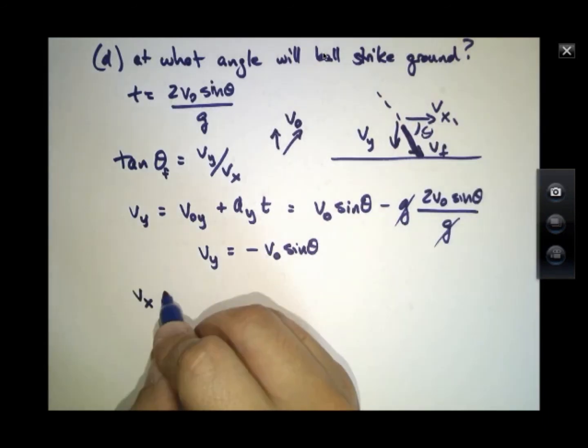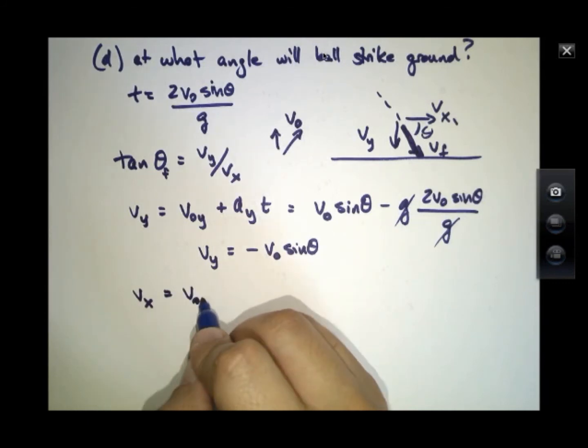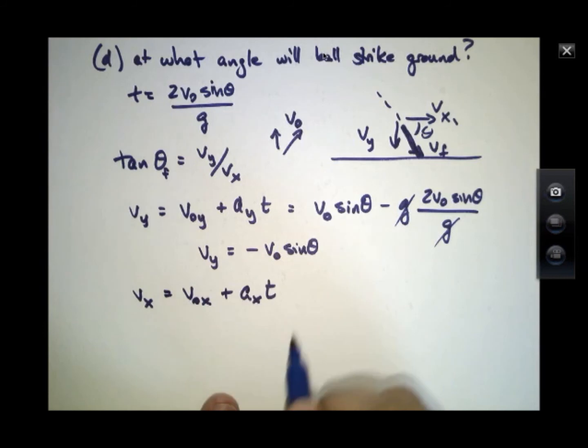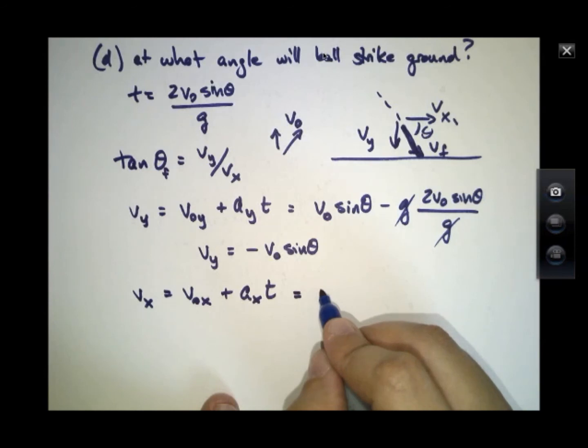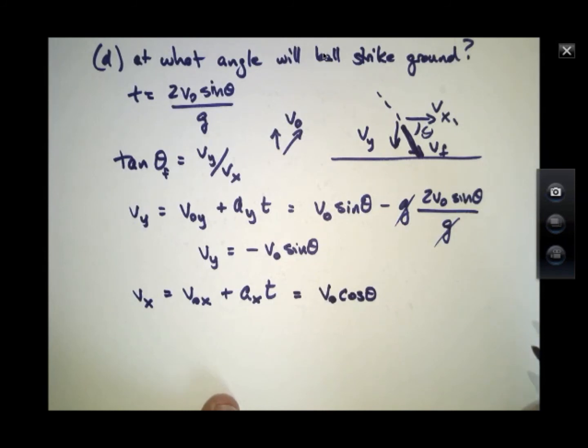Vx at the end of its trajectory is V0x plus Ax times time, while V0 in the x-direction is V0 cosine theta. And there's no acceleration in the x-direction, so the second term is zero. And this just says that Vx when the ball lands is V0 cosine theta. It's the same as it was at the very beginning of the ball's path, which is fine because it's just moving at constant speed in the x-direction.